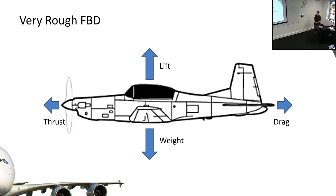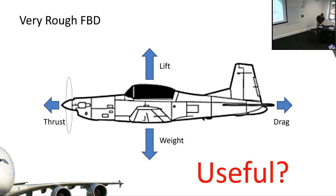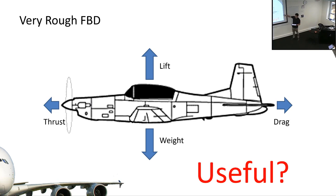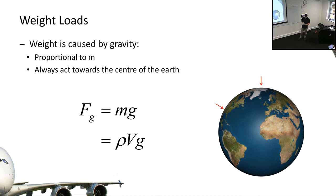In straight level flight there's nothing happening out of the plane of interest. From a structures perspective, this particle FBD isn't really telling us anything about the loads in the airframe. It tells us what's happening to the airframe as a whole, but nothing about how much load is in the wing or the tail. This diagram can tell us how the aircraft moves around as a particle, but nothing about the structures.